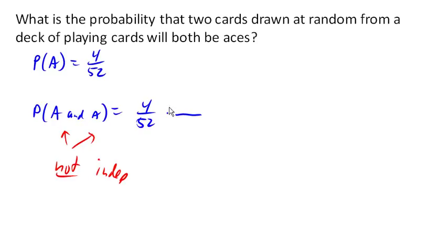So now for our first draw, probability of ace on the first draw is still 4 out of 52. But for our second draw, this is going to change. This is now the probability of an ace on the second draw, second draw,